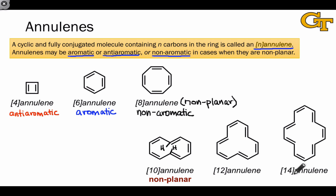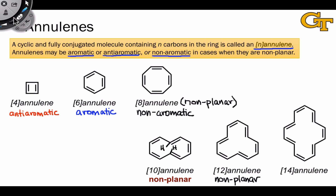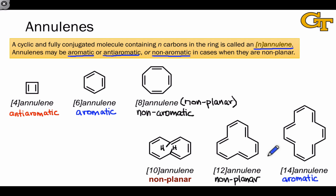12-annulene would be anti-aromatic because of its number of pi electrons, but adopts a non-planar geometry to avoid this. With 14-annulene, we're back to 4n+2 pi electrons, and thus this structure is decidedly aromatic. The annulenes provide a nice context in which we can explore the criteria for aromaticity and see what makes a molecule aromatic, anti-aromatic, or non-aromatic.